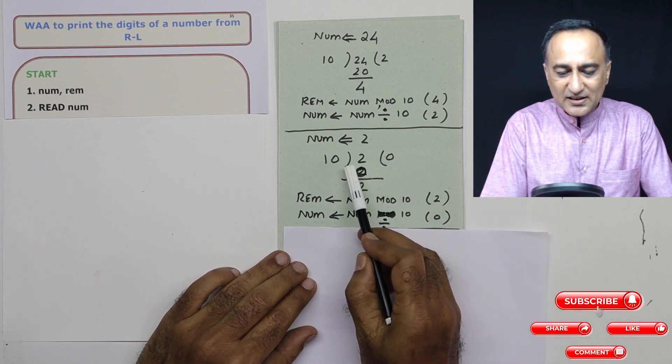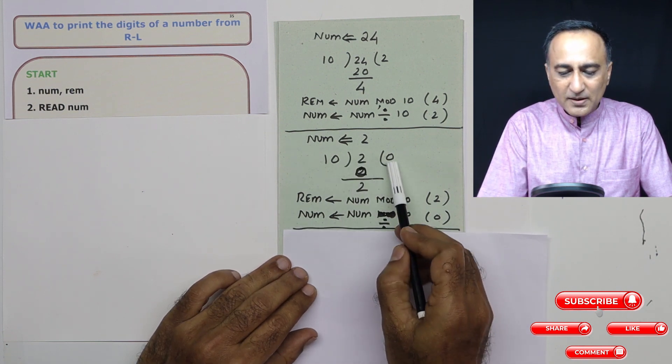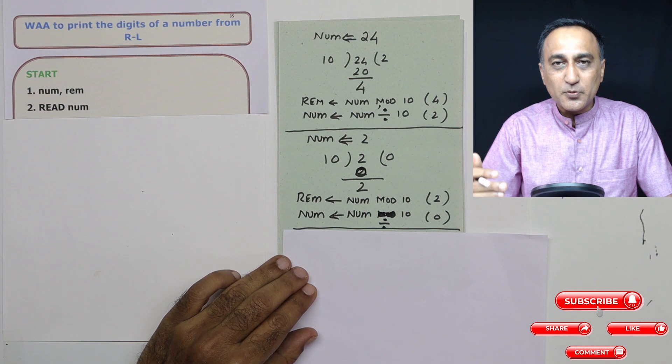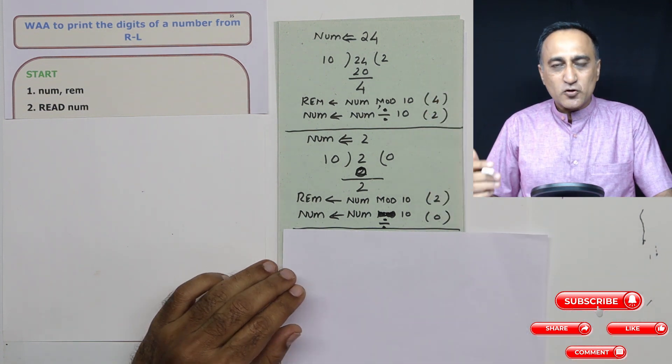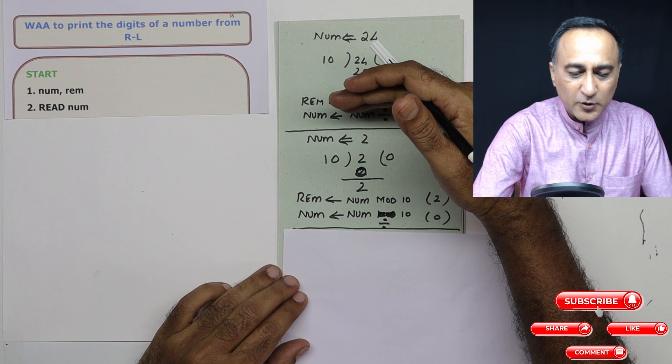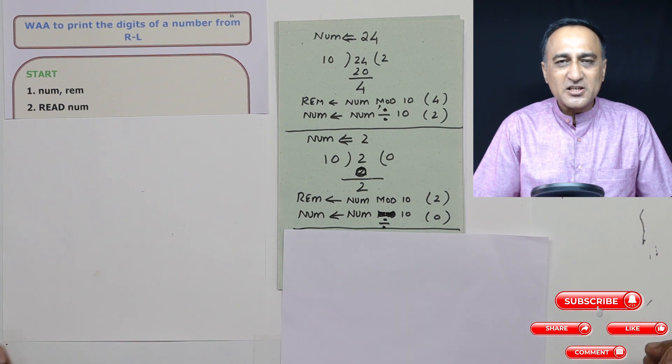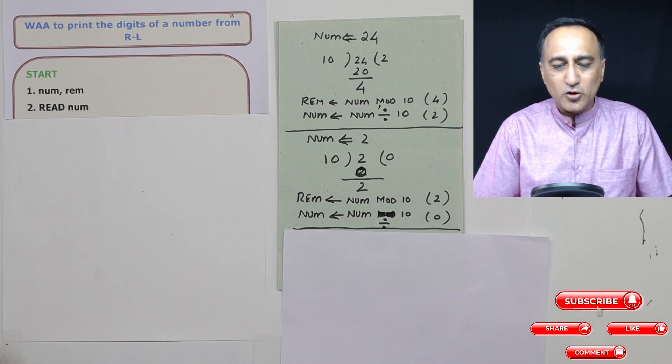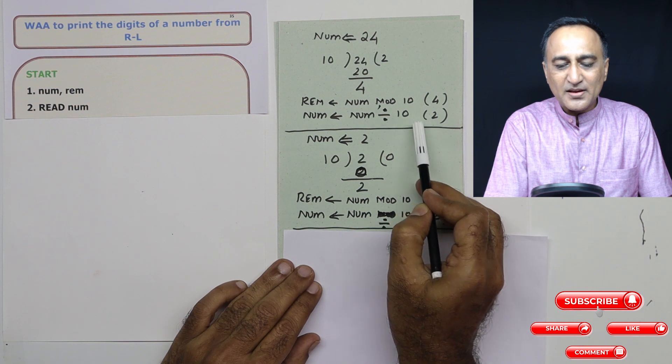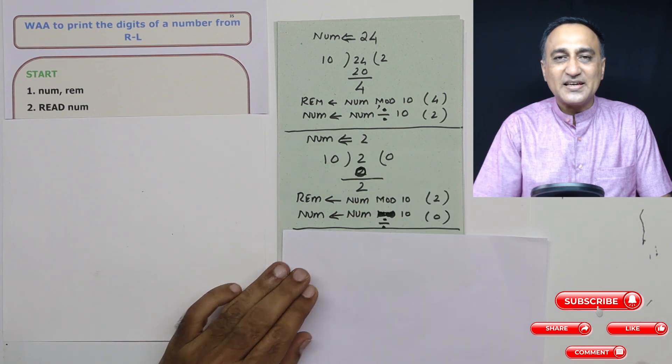Now what I do is I take the number 2 and divide by 10. So here when I divide by 10, the quotient happens to be 0. Since the quotient happens to be 0, I have finished the processing of the number because I have got 4 and I have got 2. So now you should understand, I should keep extracting the digits of the number, that means keep repeatedly doing mod and division as long as the value of number is greater than 0.